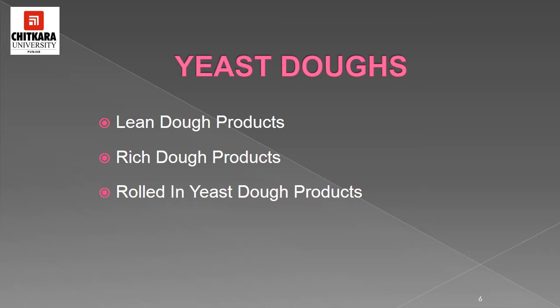A lean dough product is one that is low in fat and sugar. In rich dough products, there is no exact dividing line between rich and lean doughs, but in general, rich doughs are those that contain higher proportions of fat, sugar, and sometimes eggs. In rolled-in doughs, fat is incorporated into the dough in many layers by a rolling and folding procedure. The alternating layers of fat and dough give the baked product a flaky texture.